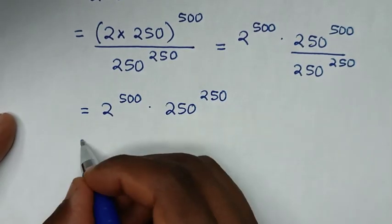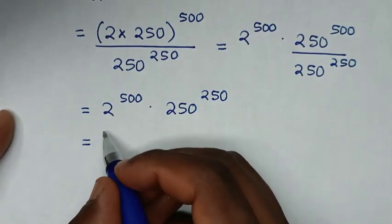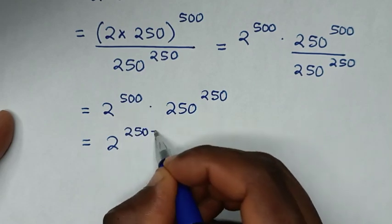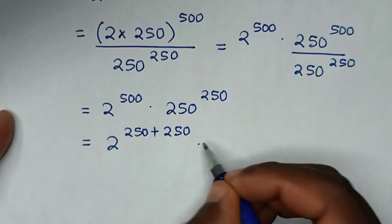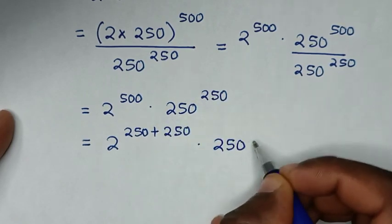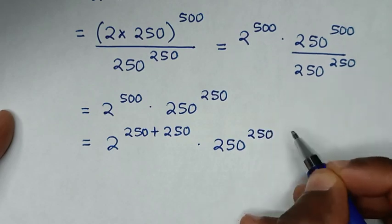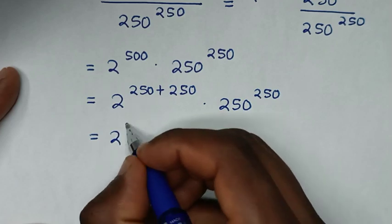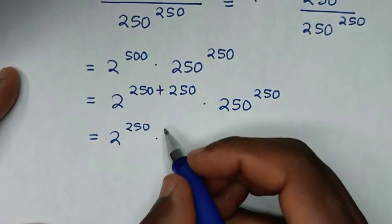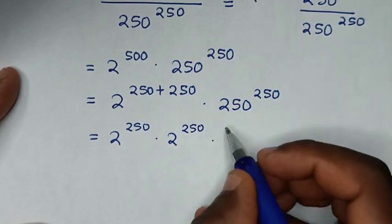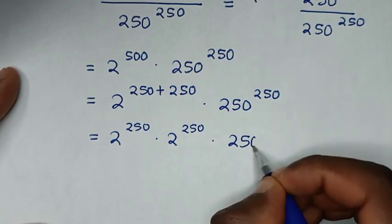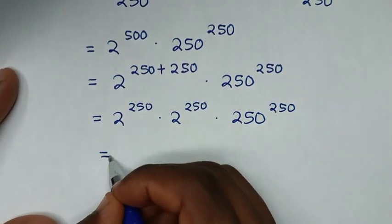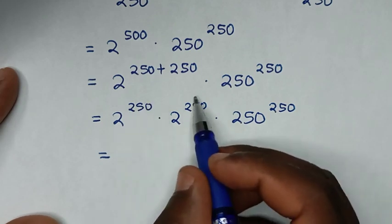The next step: it will be equal to 2 power of 500, which is the same as 2 power of 250 plus 250, times 250 power of 250. Then it will be equal to 2 power of 250 times 2 power of 250, then times 250 power of 250.